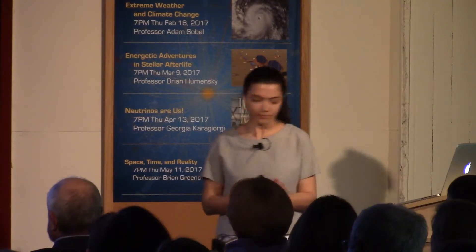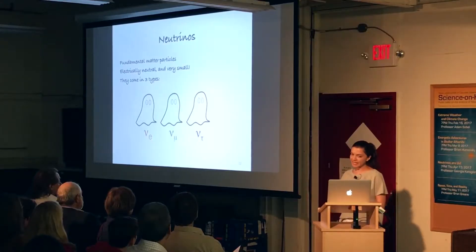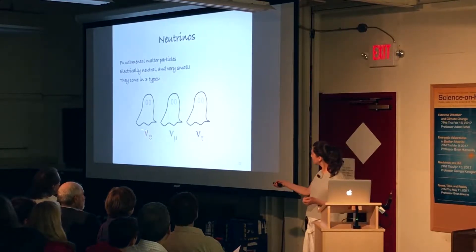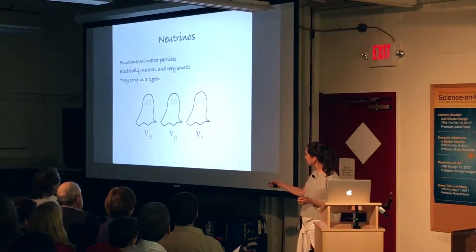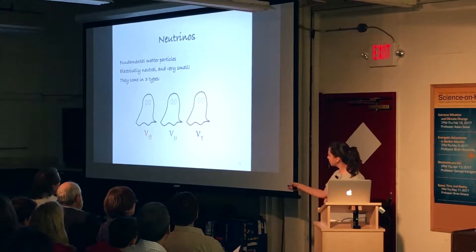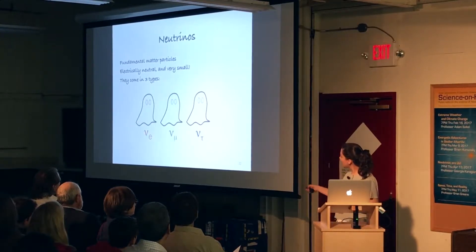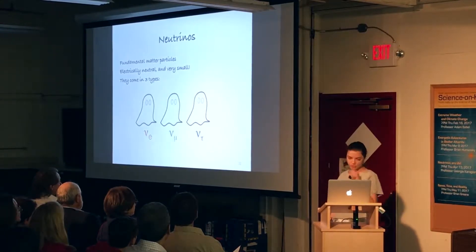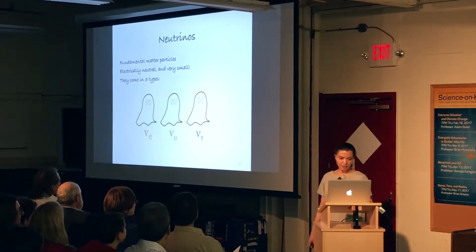Neutrinos come in three types: called the electron neutrino, the mu-neutrino, and the tau-neutrino.